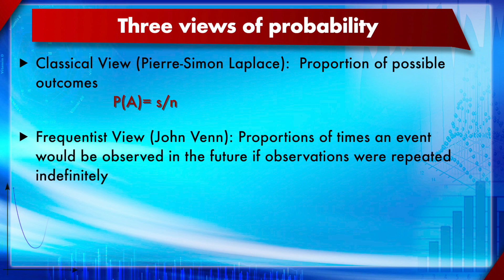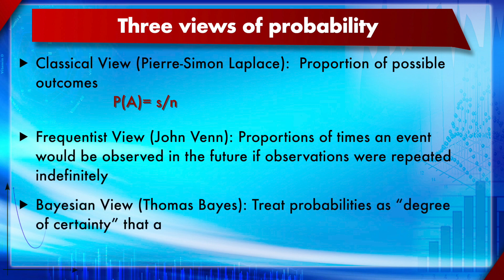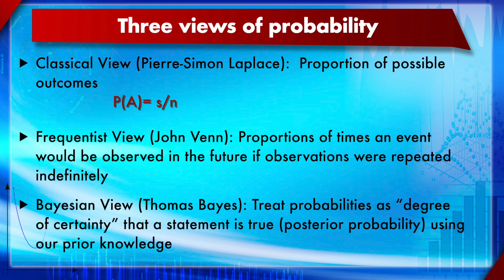The third view is the Bayesian view, credited to English mathematician Thomas Bayes. It treats probability as a degree of certainty that a statement is true. Based on prior knowledge — prior probability — you define the posterior probability. As evidence becomes more and more clear, you update the probability. The Bayesian view is a more advanced, computer-intensive approach to defining probability.